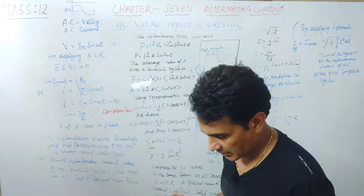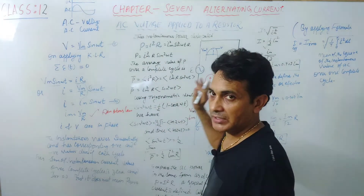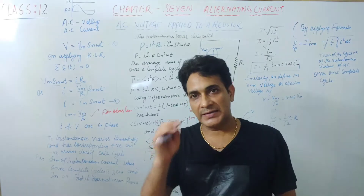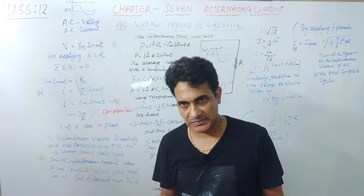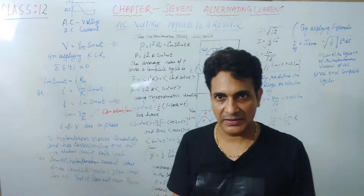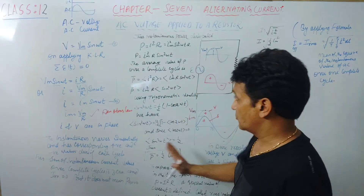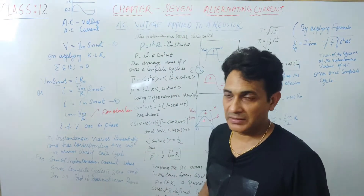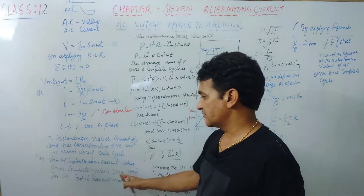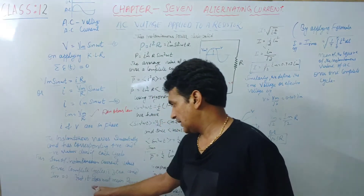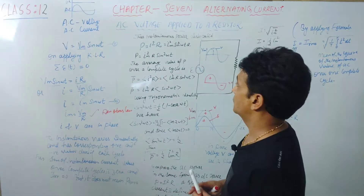Consider a plug switch in your home — when you turn it on, the speed of electricity is like the speed of light, that is 3×10⁸ m/s. So the electron's speed is approximately equal to the speed of light. That is why its power is not zero. Over a complete cycle the value is zero — that is the average value is zero — but it does not mean that average power is zero.